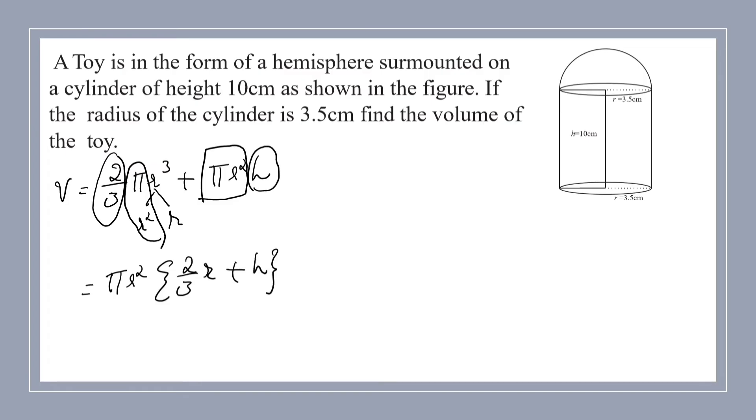Now, substitute the values. Pi is 22/7. Radius is 3.5. Instead of 3.5, you can write it as 7/2. Why? 3.5 is 6 plus 1 over 2, which is 7/2. If we write it as 7/2, then it will be very easier. We can cancel this and this 7. In the next step, let us do it. 2/3. Here, also 7/2 plus 10.